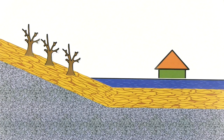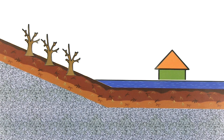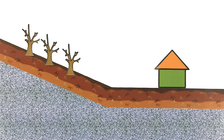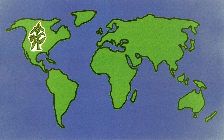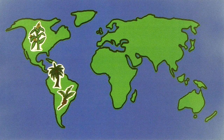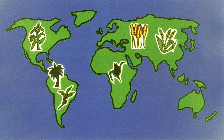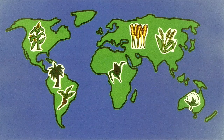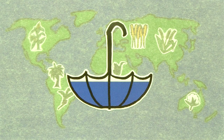Land-based rainwater harvesting contributes to the reduction of soil erosion and flood occurrence, while also enhancing groundwater recharge. Where climate change and mismanagement threaten the availability of water as a resource, rainwater harvesting systems can help increase agricultural activity, and thus food availability.